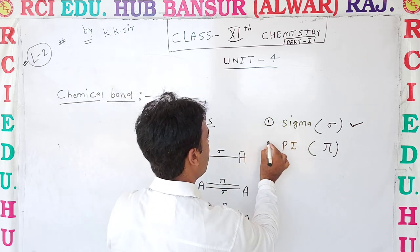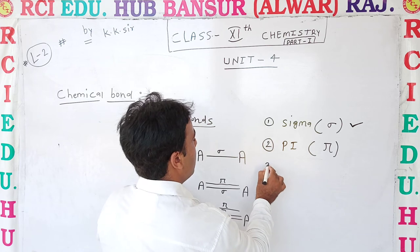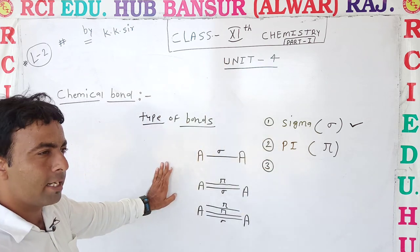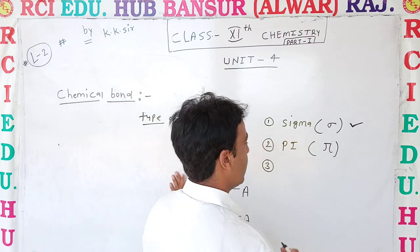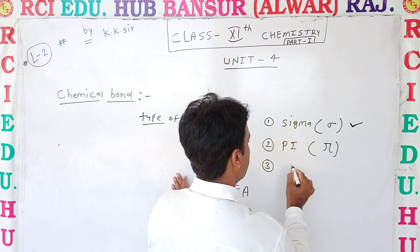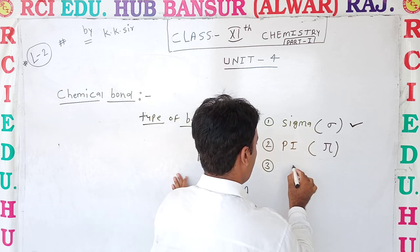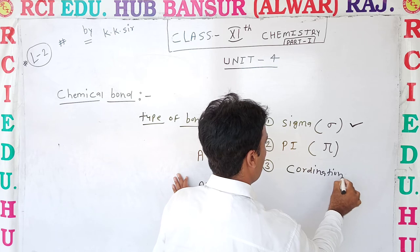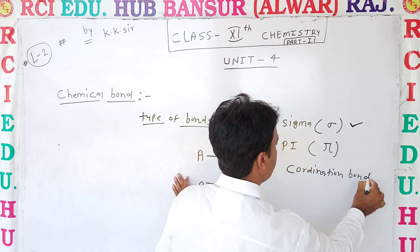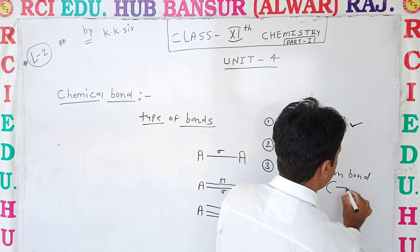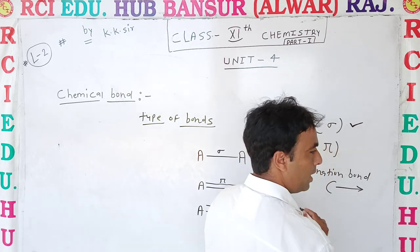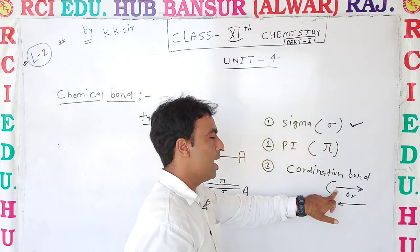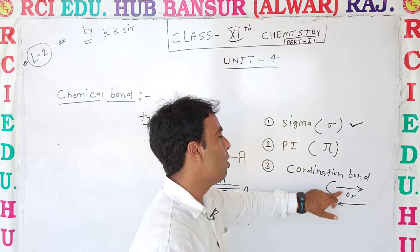There is a third type also known in other compounds, which you will see in higher classes — that is called coordination bond. Coordination bond is represented by a one-directional arrow sign — it may point this way or that way. The arrow shows the coordination bond.